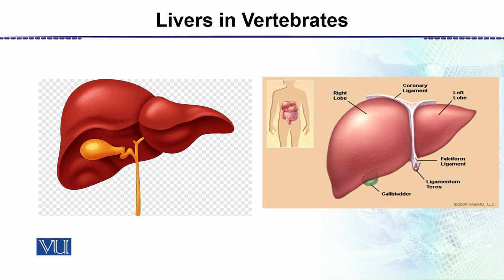The liver has two parts, particularly in a human. There is a right lobe and then there is a left lobe. Along with this, there is another organ which we call the gallbladder — it is a bag-like structure that contains a green substance which is bile.